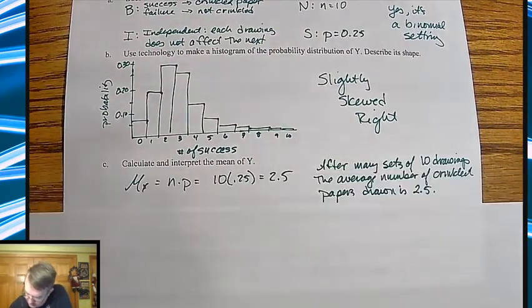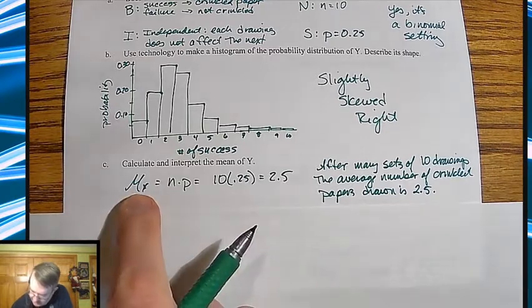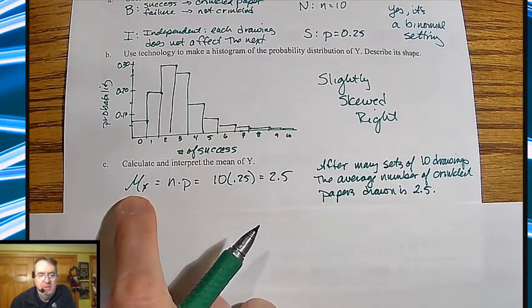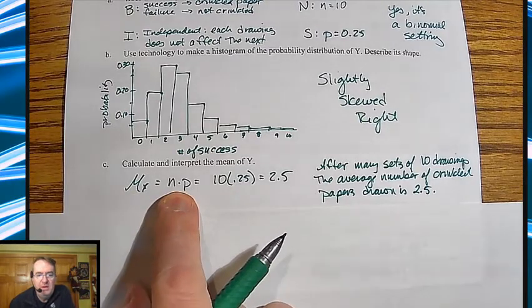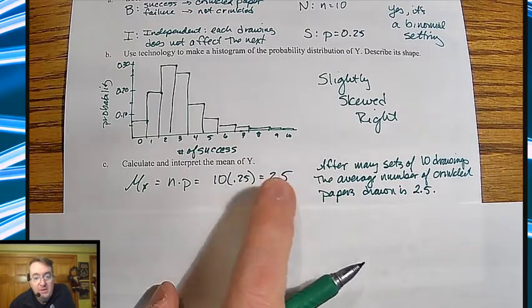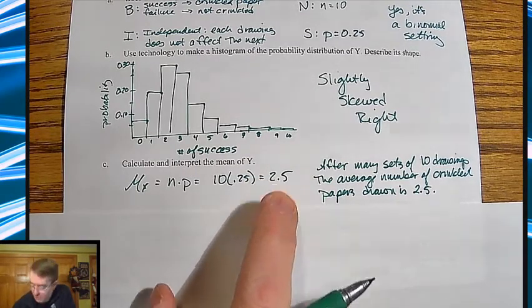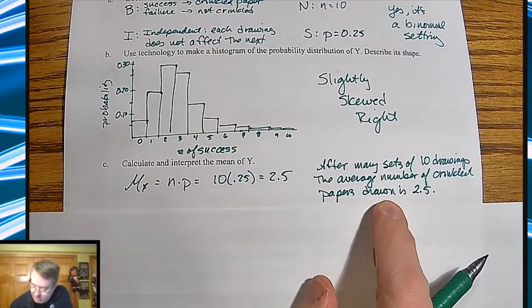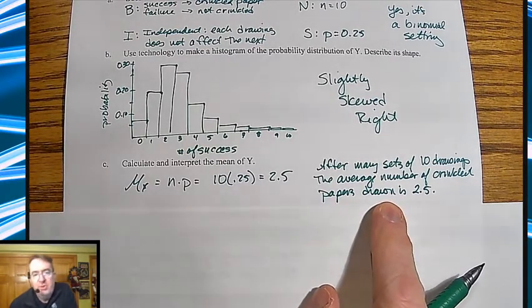Calculate and interpret the meaning of Y. Or the mean of Y, I'm sorry. So the mean is N times P. So notice, I label what I'm doing, give the formula for what I'm doing, plug in the parts of what I'm doing, and that's going to equal 2.5. All right, so the meaning of that is going to be after many sets of 10 drawings, the average number of crinkled papers drawn is 2.5.